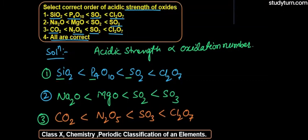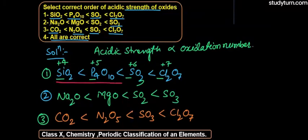Silicon का oxidation number यहाँ पर +4 आएगा, Phosphorus का +5 आएगा, Sulfur का SO3 में +6 आएगा, और Chlorine का Cl2O7 में +7 आएगा। यहाँ पर हम देख रहे हैं कि SiO2 से Cl2O7 तक oxidation number increase कर रहा है, तो acidic strength भी increase करेगी — मतलब First Option correct है।